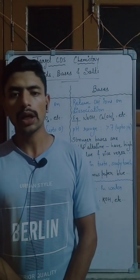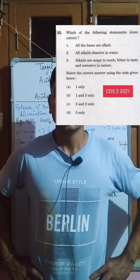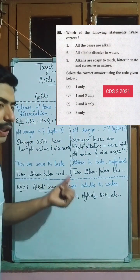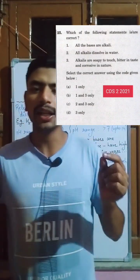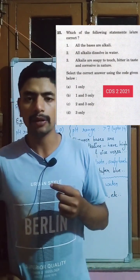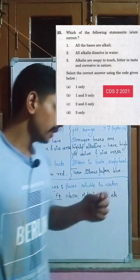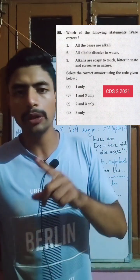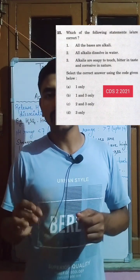The next question is CDS2 2021, which has three statements. The first statement says all bases are alkali. We have learned that alkali bases are a special category of base which are soluble in water — so not all bases are alkali. Therefore, statement 1 is wrong. The second statement says alkali is dissolved in water, which is correct because alkali bases are soluble in water. Using the process of elimination, and noting that statements 2 and 3 are correct — bases are also corrosive — option C is the correct answer.